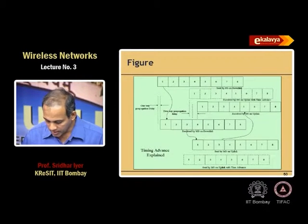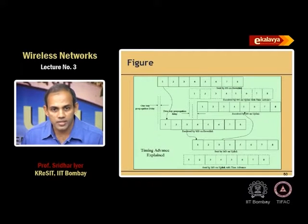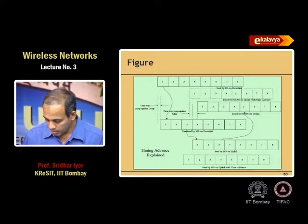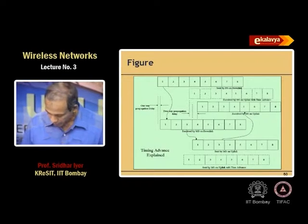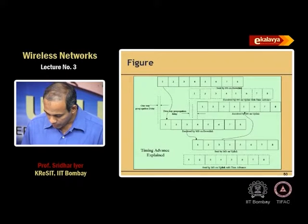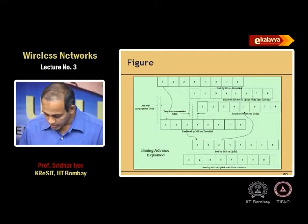The question is how to compute this time. First, how do I do the transmission, and second, how do I compute? There is a one-way propagation delay from the base station to the mobile node. Once this reaches the mobile node, it knows that its transmit slot is plus 3, so it knows it should transmit in slot 4. It transmits in slot 4 — this is what the mobile node sends — and that is further pushed by another propagation delay, which is when it gets received at the base station.